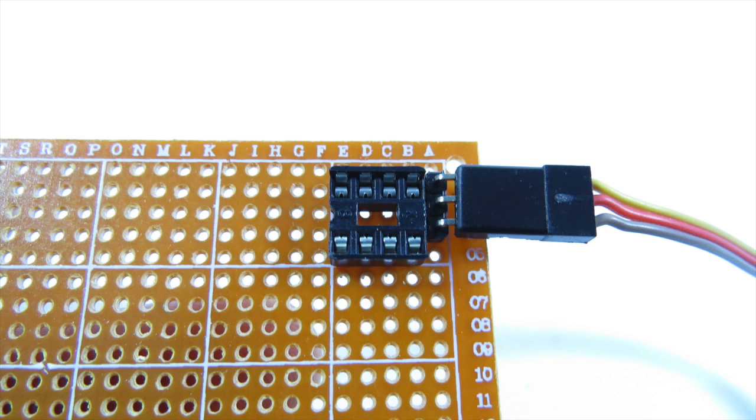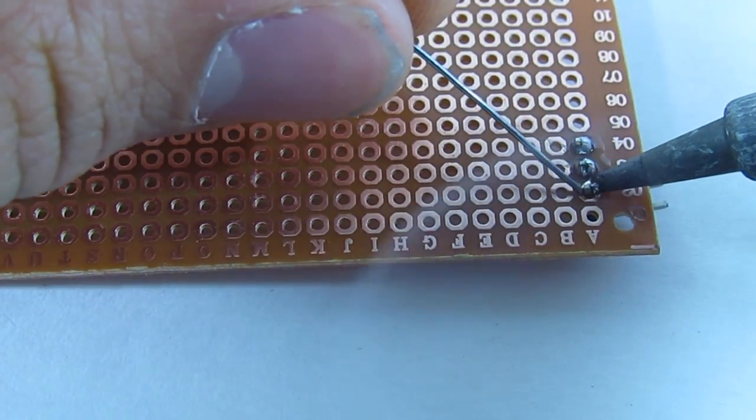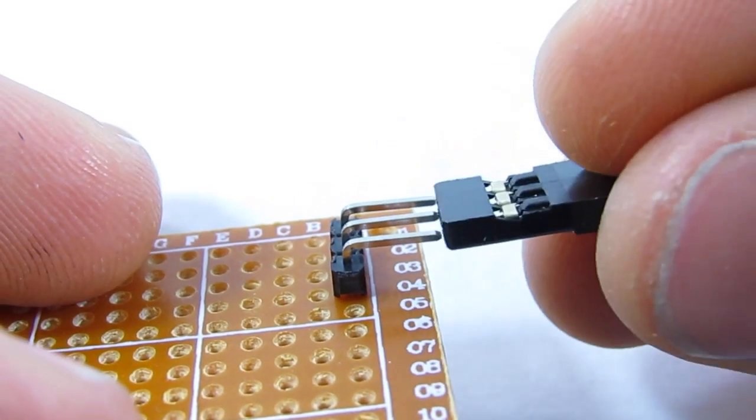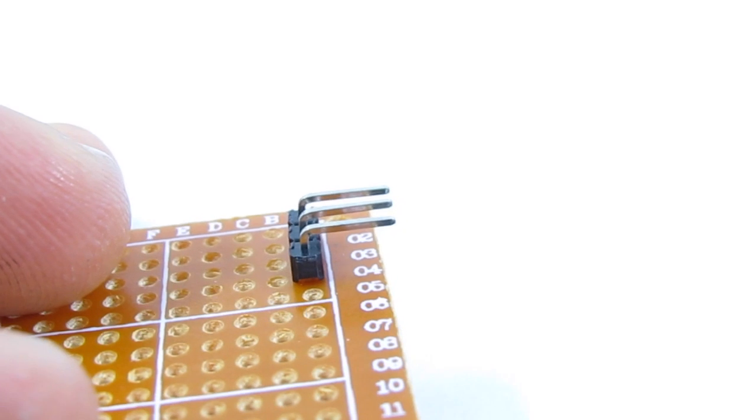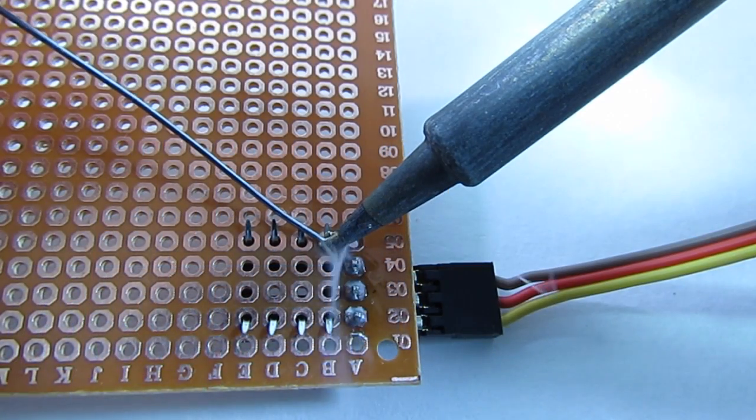I start by placing a right angle pin header on the very front of the board and then the 8 pin socket right after. Solder down these 3 pins and check to see if the male extension lead fits in. Push the servo extension lead into the pin headers in the opposite way shown in this clip. Leave it in so that you have it for reference. Place the 8 pin socket right after the pin headers and make sure that the notch is facing away from the pin headers.